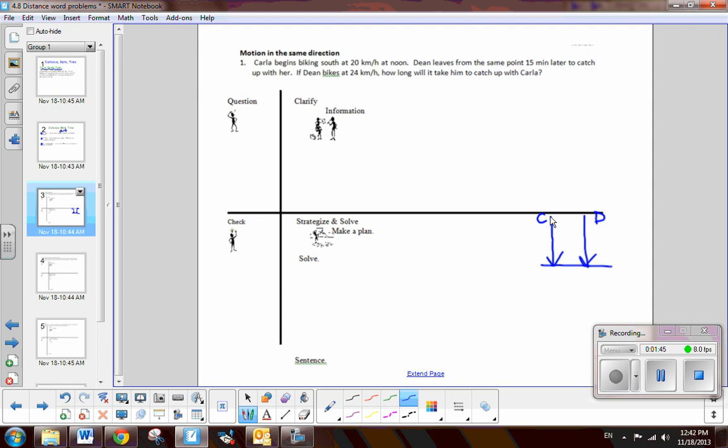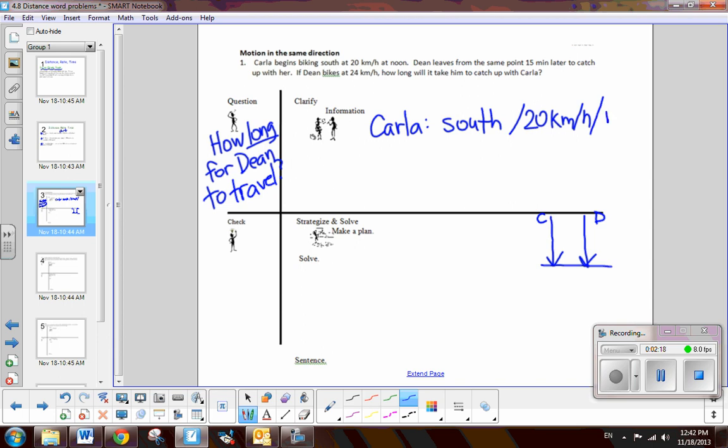So, the first thing we always do is look at what is the question. The question is, how long will it take Dean to catch up with Carla? So the question is, we're looking for time. How long? That is time for Dean to travel. So, the answer we're looking for is time. Now what are the facts? Well, we are told that Carla, she is going south, so we know the direction, and we know her rate is 20 kilometers per hour, and we know her time. She leaves at noon. At least we know the time she left. We don't know the amount of time she traveled.